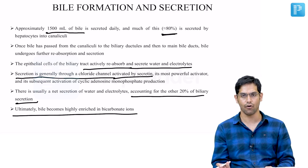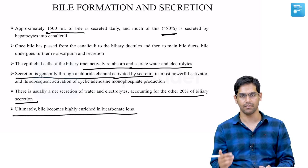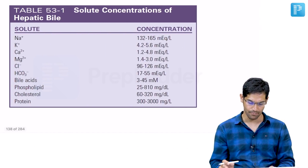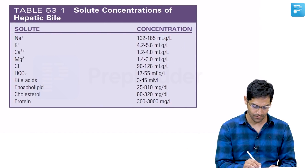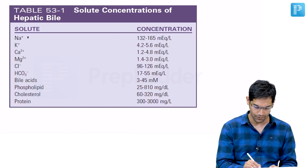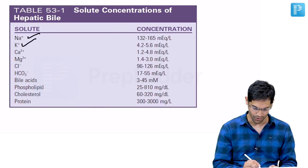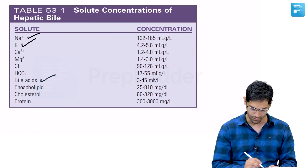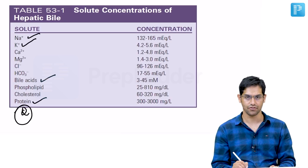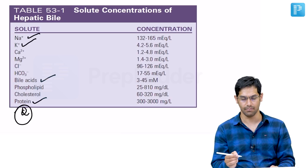In the common bile duct, around 80 percent of bile has come from the hepatocytes and around 20 percent from the biliary canaliculi. To remember: the concentration of sodium, potassium, and bile salts in hepatic bile is important — the concentration of protein in bile has also been asked.